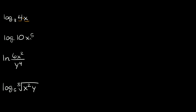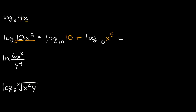Now let's go to the next one: log of 10x to the 5th. Again we're multiplying some terms together — we have 10 and x to the 5th. You might notice we don't have a base number, and whenever that number is missing it's implied that the base is 10. So we rewrite this as log base 10 of 10 plus log base 10 of x to the 5th. This first term — log base 10 of 10 — is equal to 1, because 10 raised to the first power equals 10.